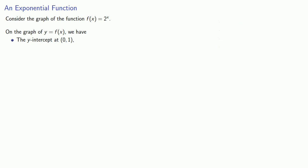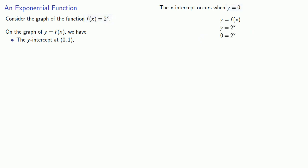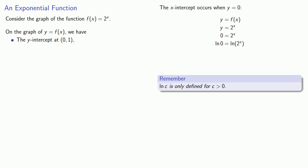We can also find the x-intercept. The x-intercept occurs when y is equal to 0, so we set y equals f of x equal to 0 and try to solve. We could take the log of both sides, but remember the log of c is only defined for c greater than 0. So log of 0 is undefined, meaning there is no solution and no x-intercept.